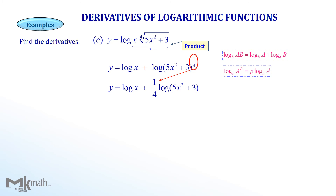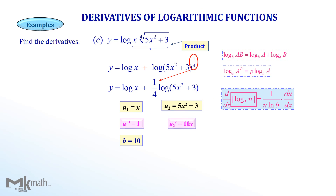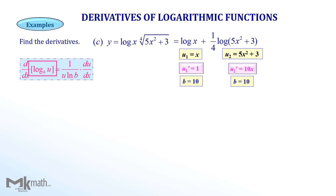Now we can apply the general derivative formula of log. Let's identify u, u', and b. For the first term, u equals x, u' equals 1, and base b equals 10. For the second term, u equals 5x squared plus 3, u' equals 10x, and b equals 10. Now we have u, u', and b values for each function, so let's apply the right side of the formula. Make sure that there is ln of b in the formula this time.